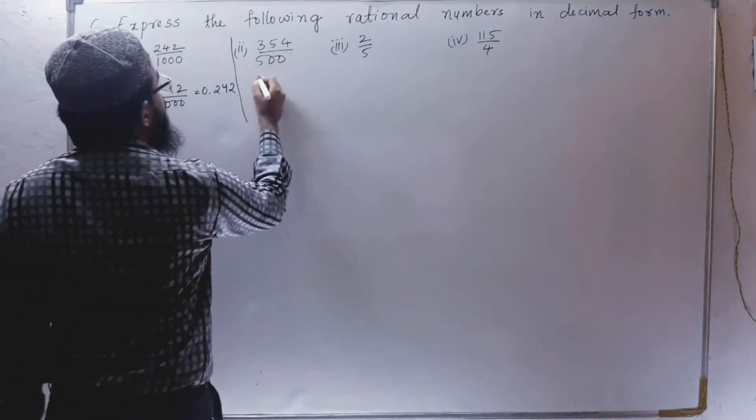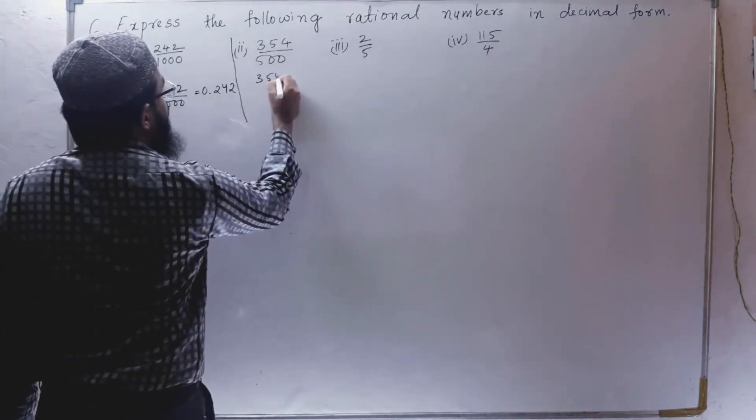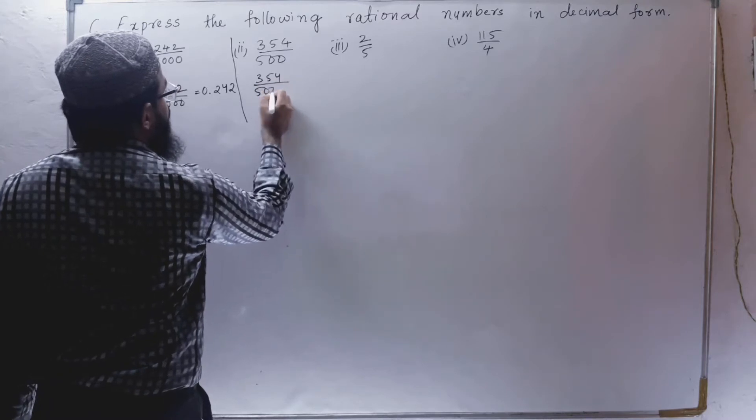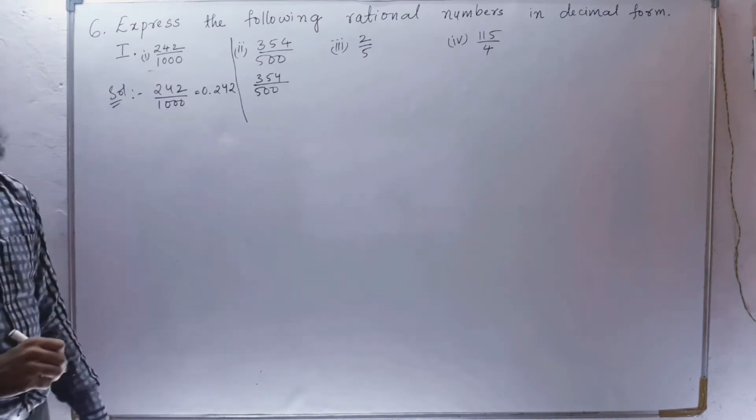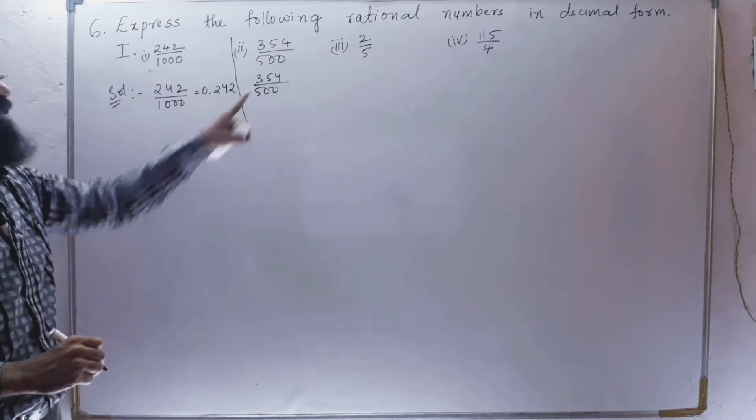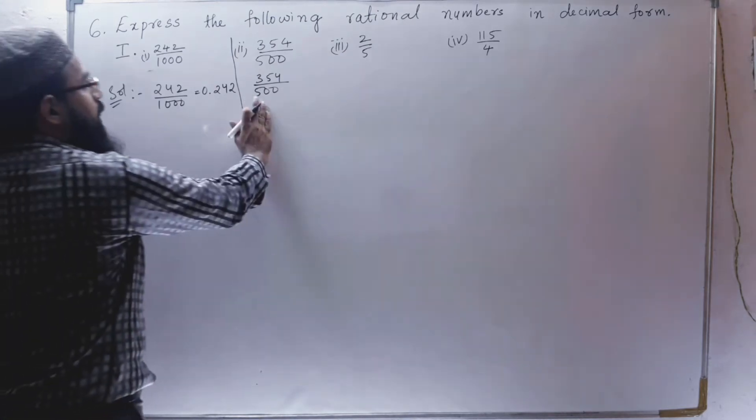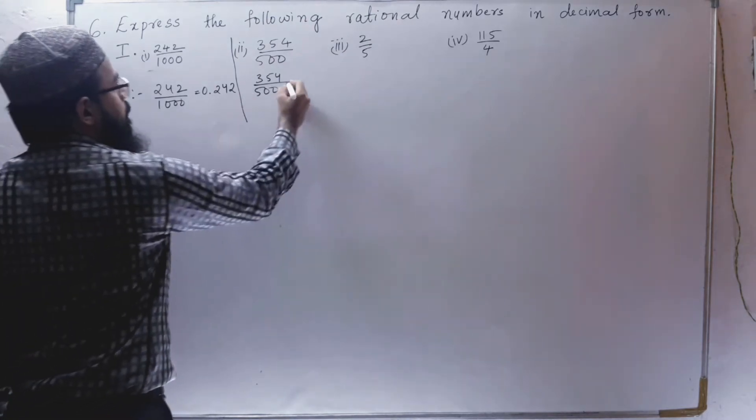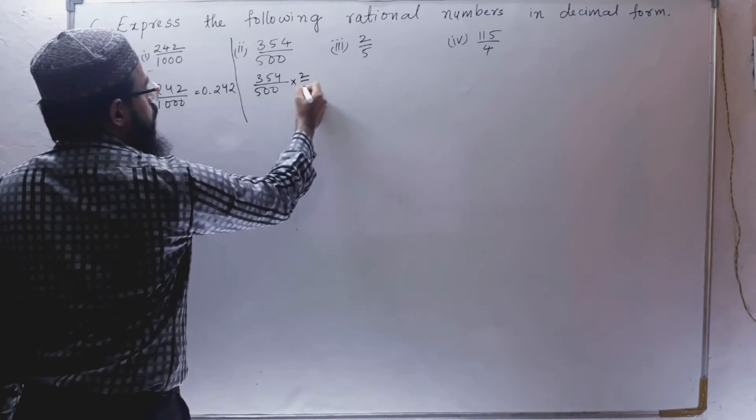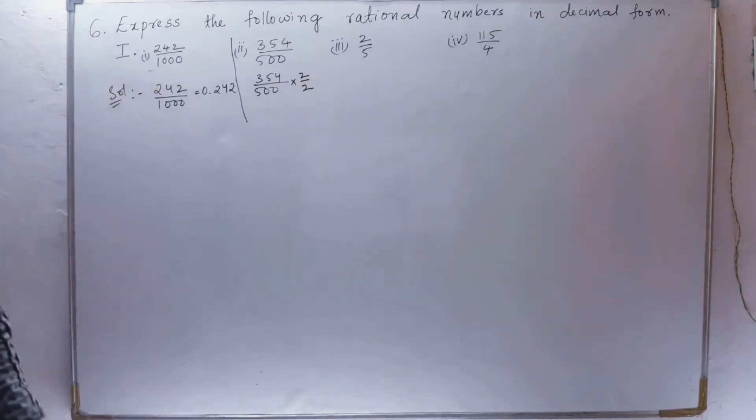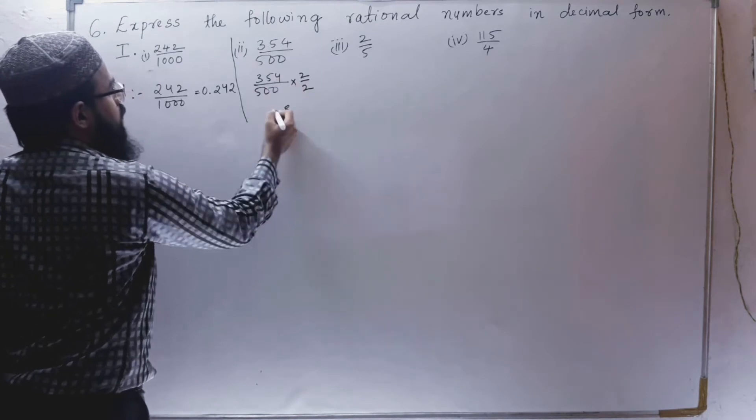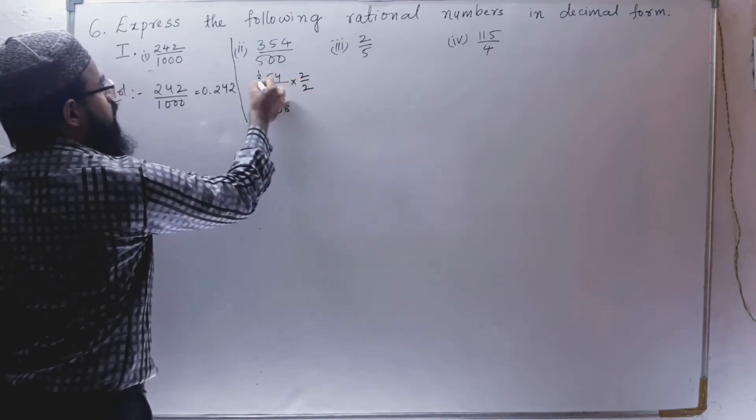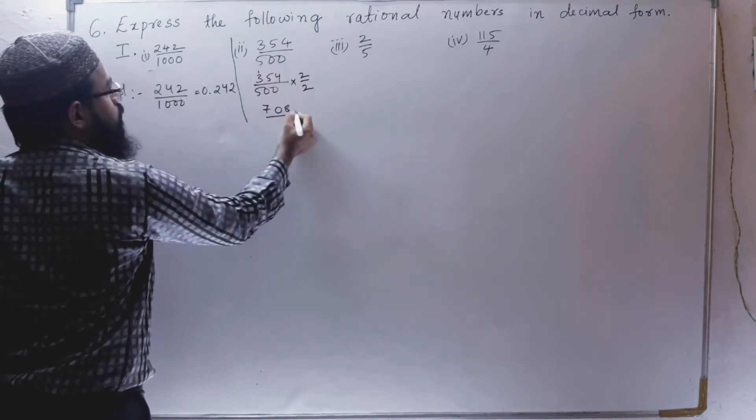Second bit: 354 by 500. So this 500 cannot be written as this one. Why? Because 5 is present here. So let us make this as 1000 by multiplying with 2. Multiply and divide with 2. So 2 times 4 is 8, 2 times 5 is 10, 2 times 3 is 6 plus 1 is 7.